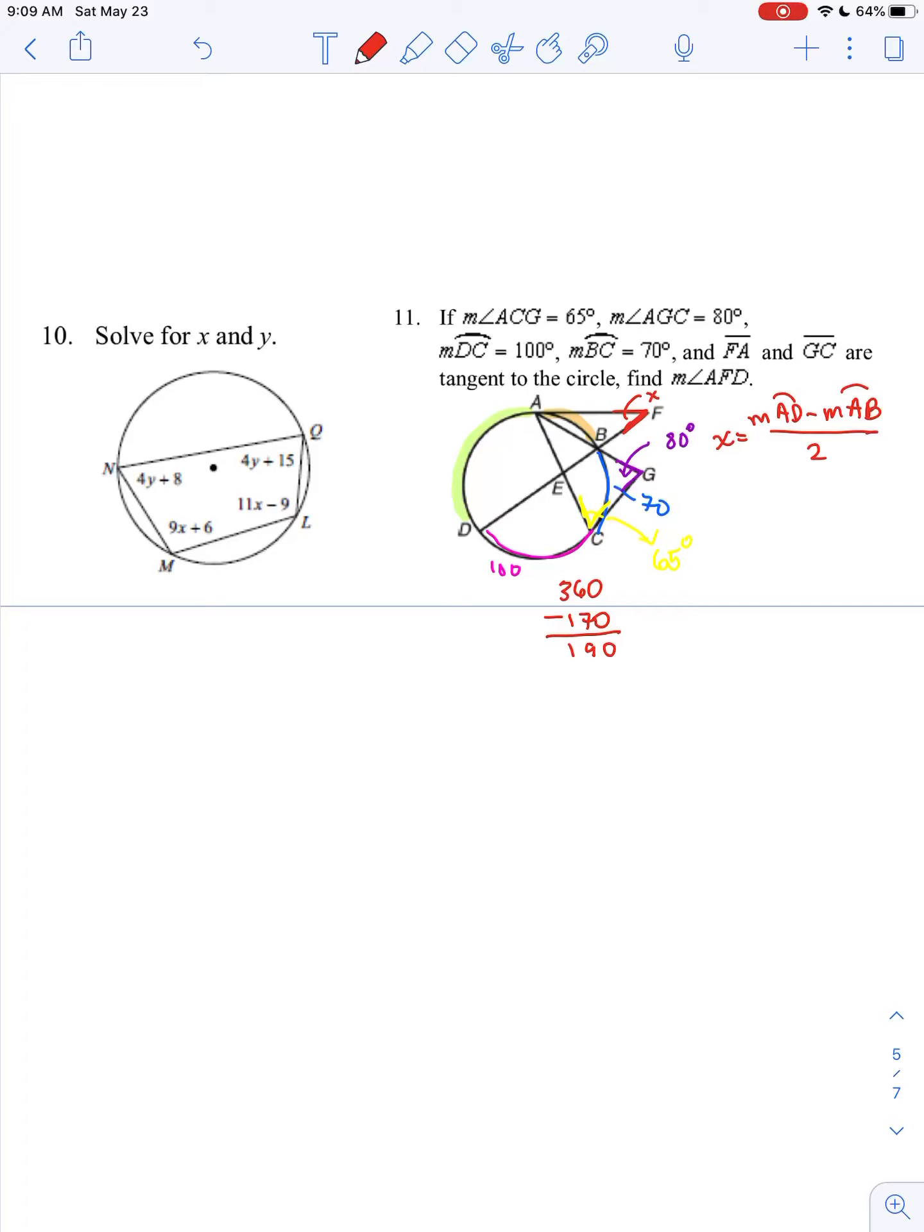When we go back, I see that while I do have arc DC and I'm trying to find arc AD, they give me that angle AGC is 80 degrees. AGC has an intercepted arc that includes AD and DC. So that means arc AD plus DC minus arc BC must be equal to the angle measure inside, since that is an outie.